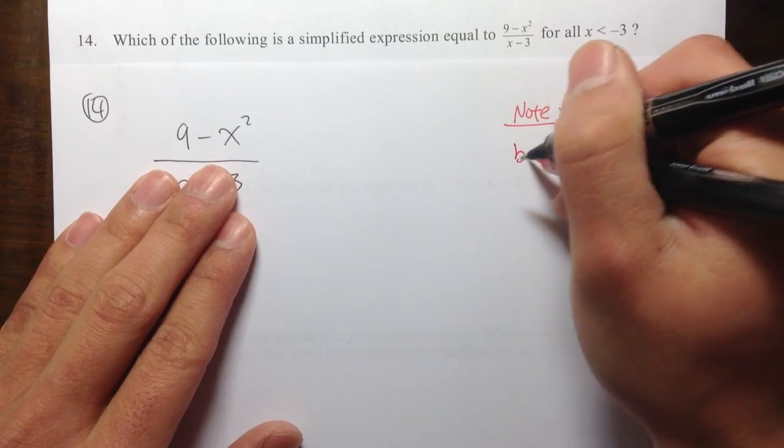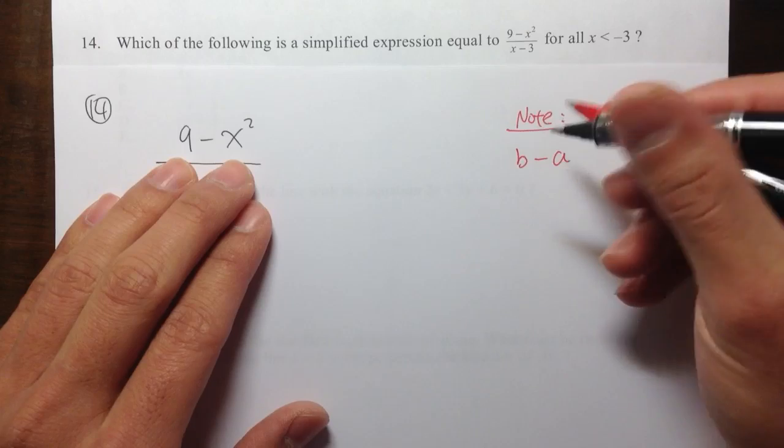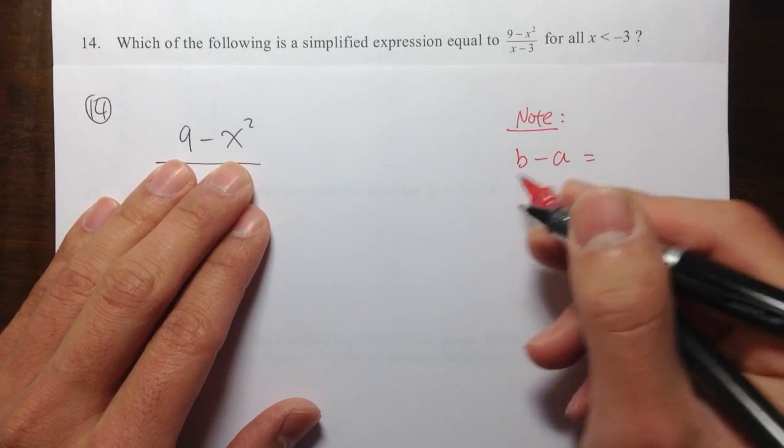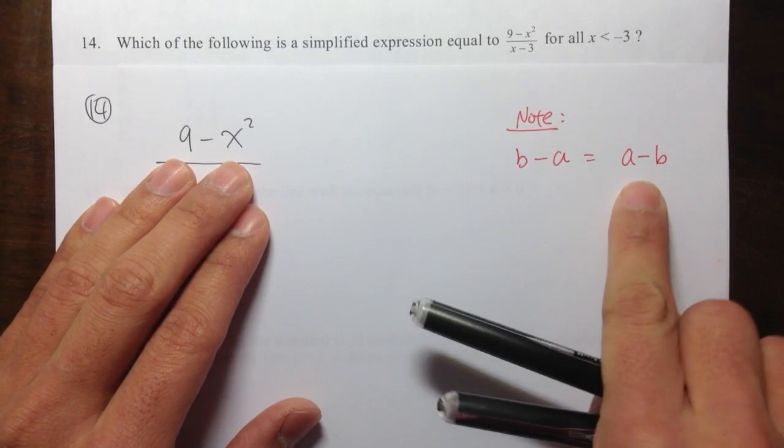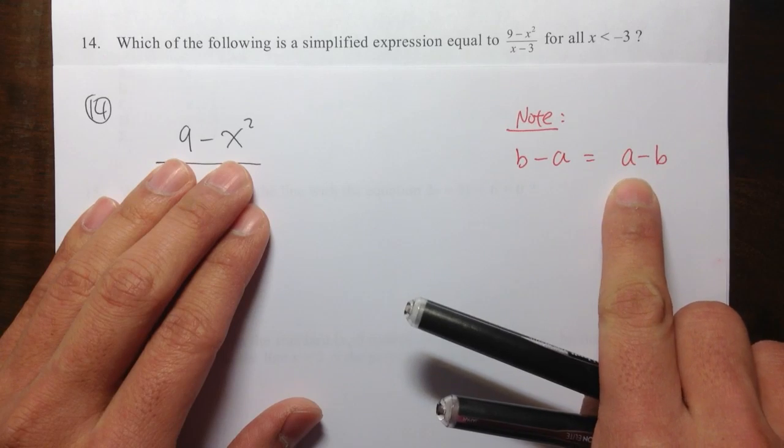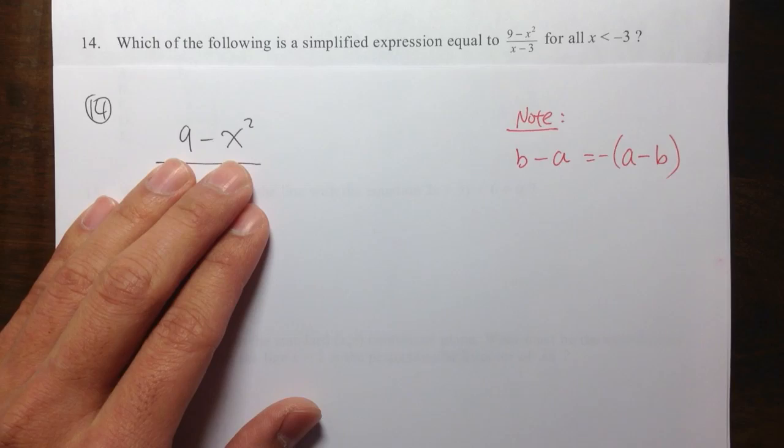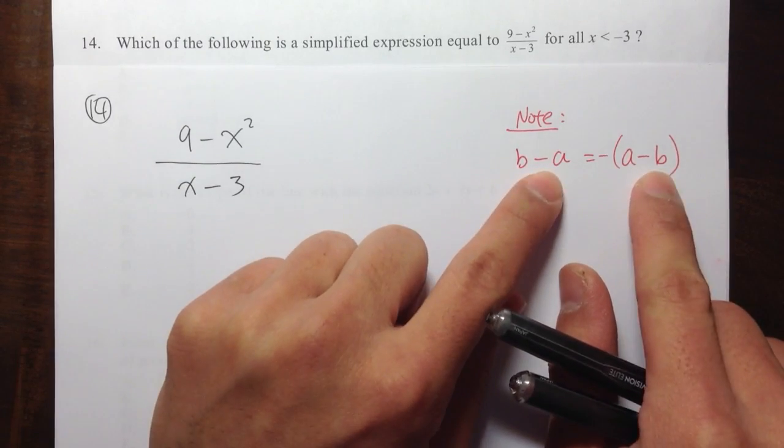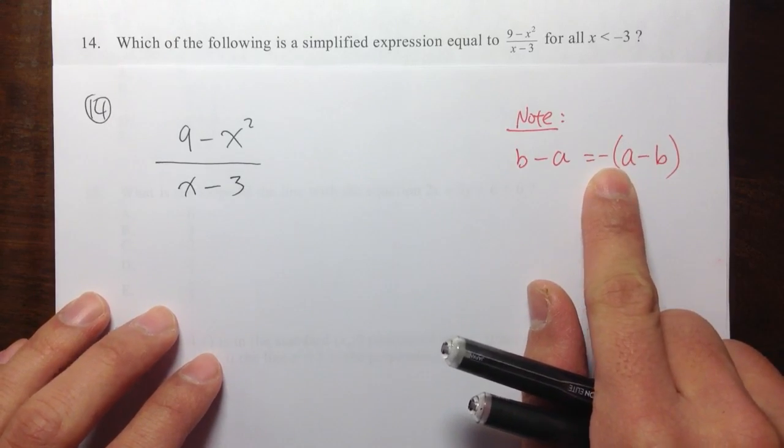If you have some number, let's say b minus a, if something is kind of out of order, we can actually switch the order when we have a subtraction. So instead of b minus a, we want to write this as a minus b. But you need to put a negative and then put a parenthesis around it. If you switch the order of subtraction, the result would be a negative.